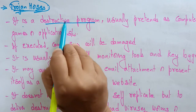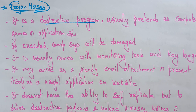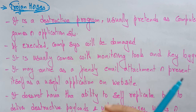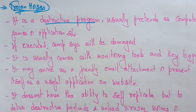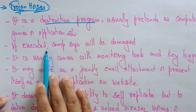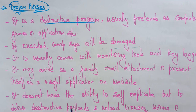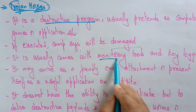The Trojan horse is a destructive program that simply pretends to be a computer game or application software. But if you install it, it is not actually a game — it is a destructive program. When you try to install and execute it, your computer system will be damaged. It usually comes with monitoring tools and keyloggers.